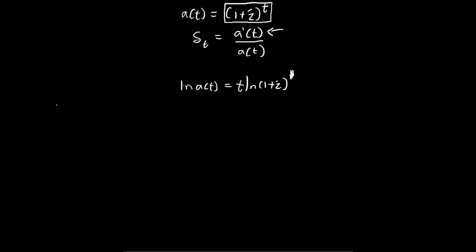Now let's take the derivative of both sides with respect to t. Using the chain rule, this term becomes 1 over a(t) times a prime of t. Now this side, this is t multiplied by a constant. So taking the derivative with respect to t we get natural log 1 plus i.